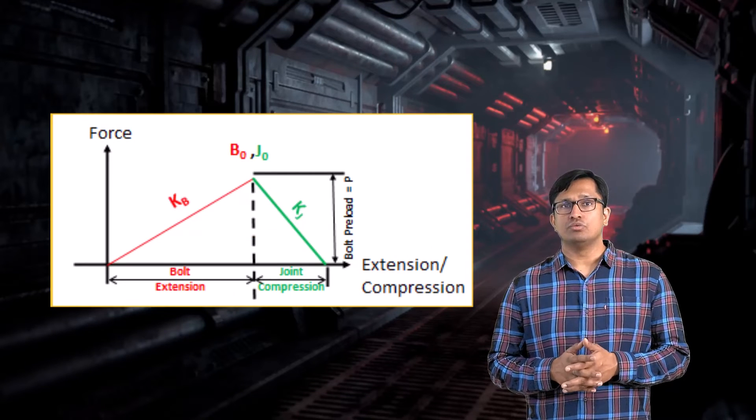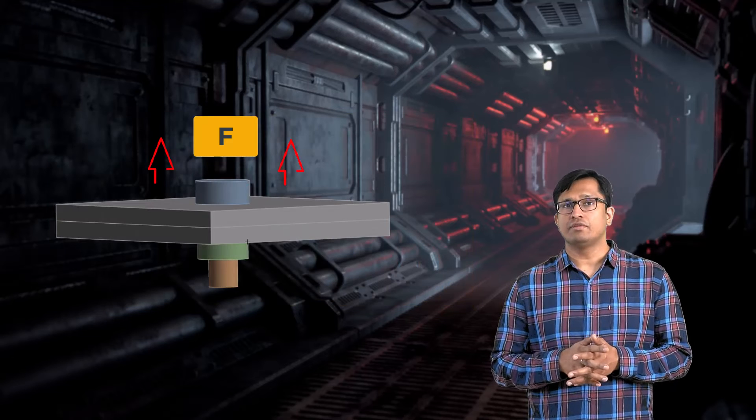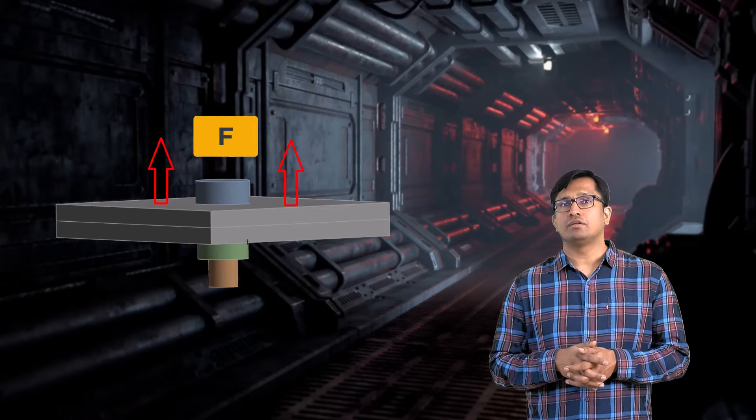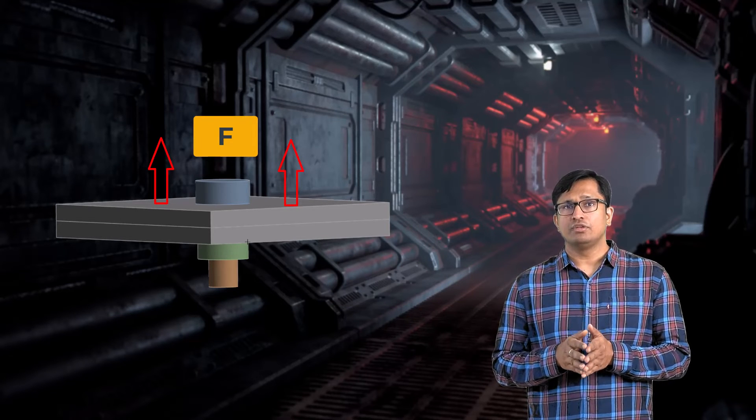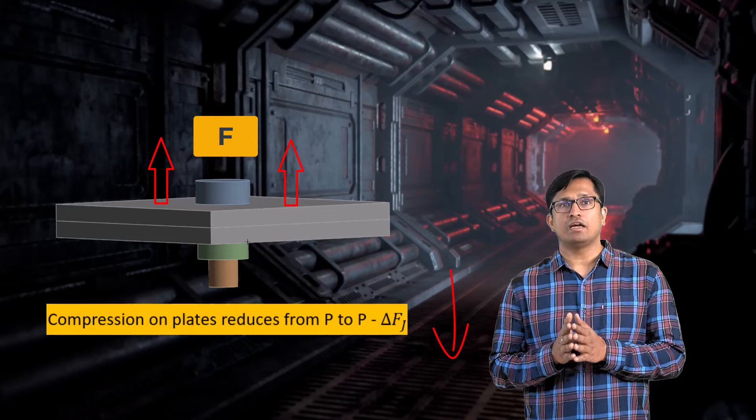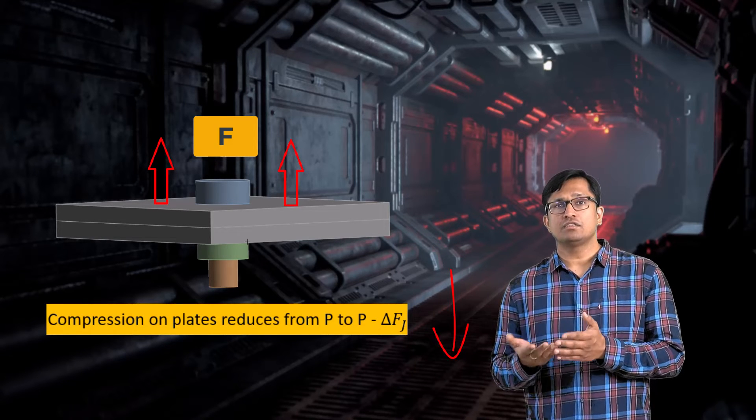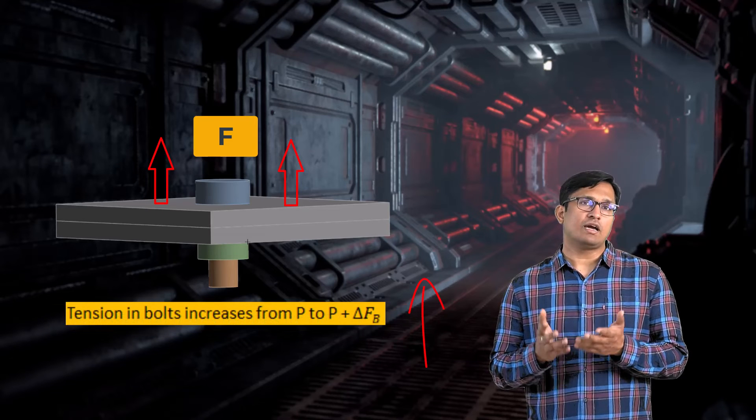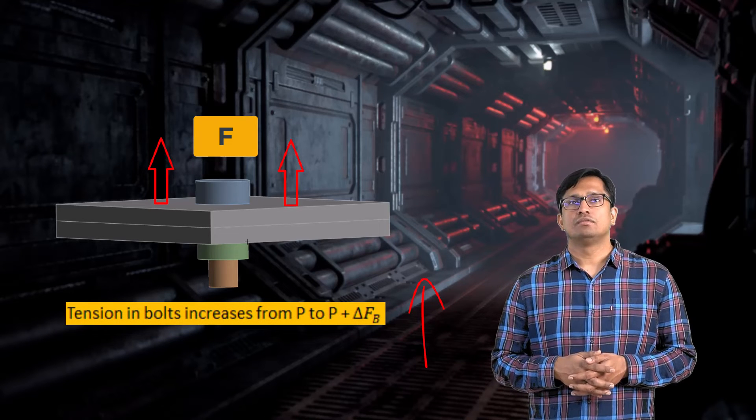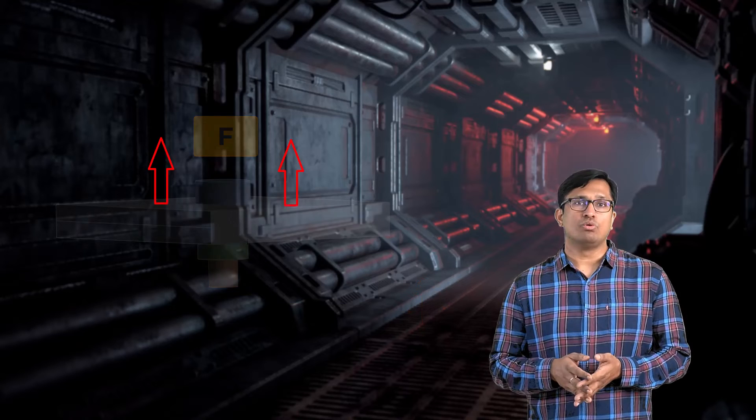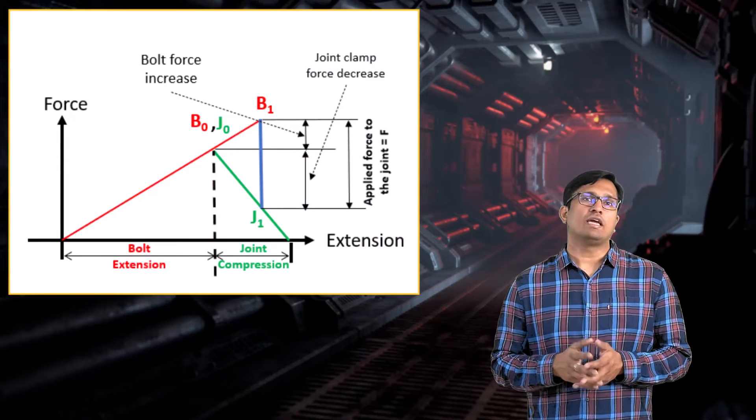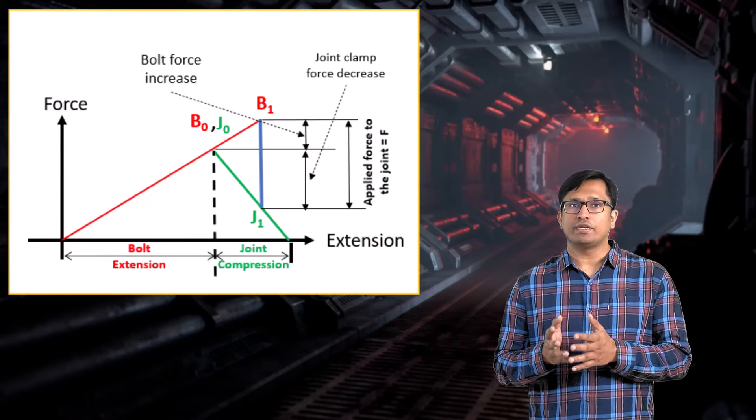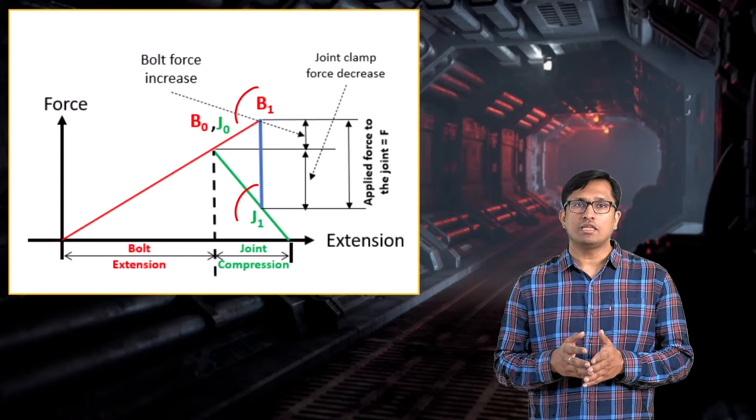Now let's assume that an external force F is applied on the clamped part. This force F reduces the clamping force on the joint by delta Fj and increases the load on the bolt by delta Fb. The new states of the bolt and the clamped parts can be represented on the joint diagram by points B1 and J1.